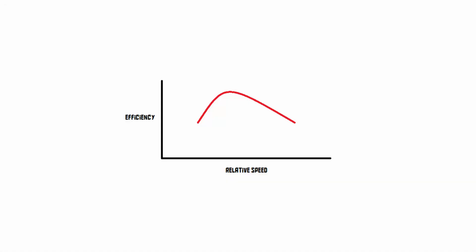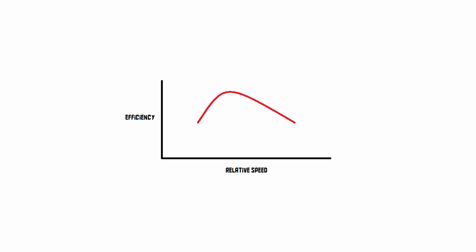If you plot the tip-speed ratio against the efficiency, you'll find a curve that looks kind of like this. The interesting thing is that the more blades you put on a wind turbine, the more it's going to block the wind at any given speed. So this curve shifts towards the left as you add more blades — meaning a turbine with more blades becomes more efficient at lower speeds, whereas a turbine with fewer blades becomes more efficient at higher speeds.